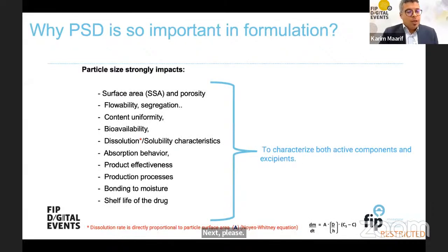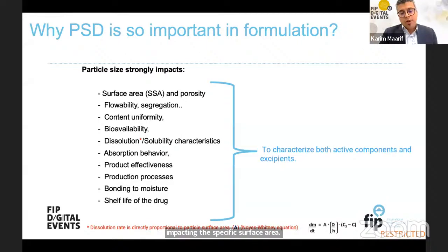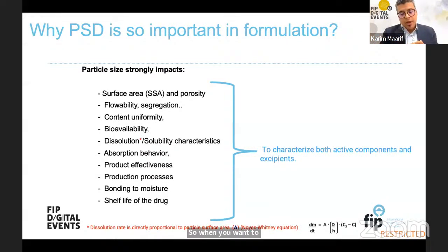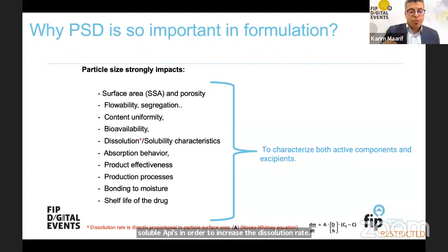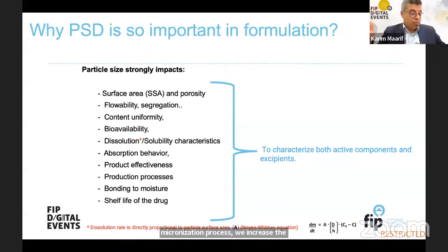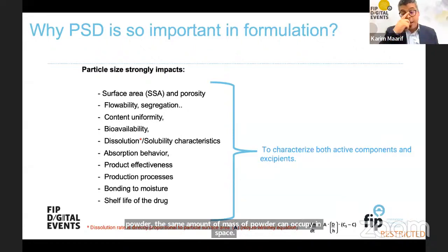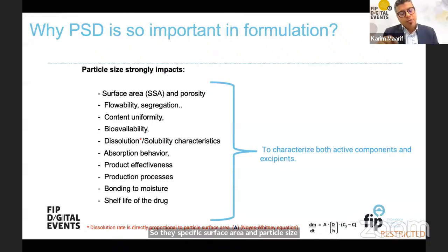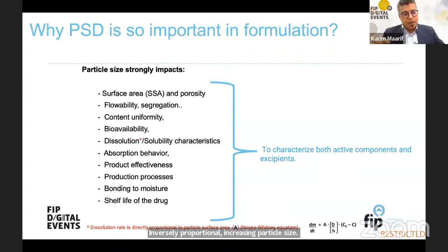For solid dosage forms, particle size strongly impacts the specific surface area. When you want to increase the dissolution rate and solubility — especially for poorly soluble APIs — we may reduce the particle size. By reducing it through grinding, milling, or micronization, we increase the area that the same mass of powder can occupy in space. The specific surface area and particle size are inversely proportional: increasing particle size reduces the specific surface area, and vice versa.